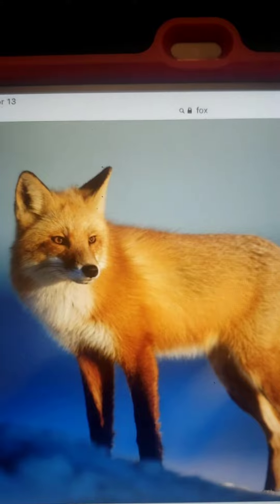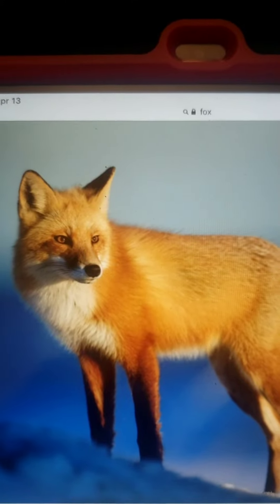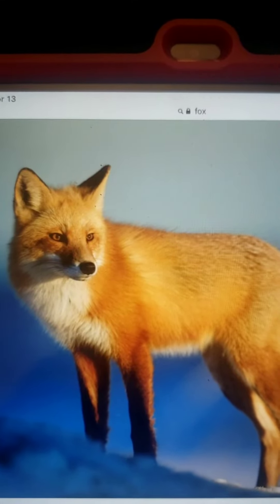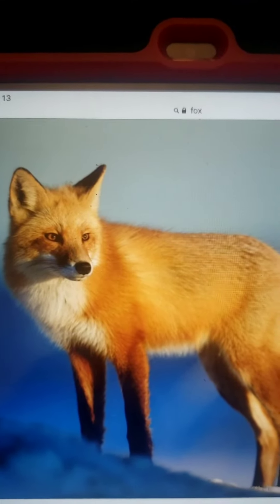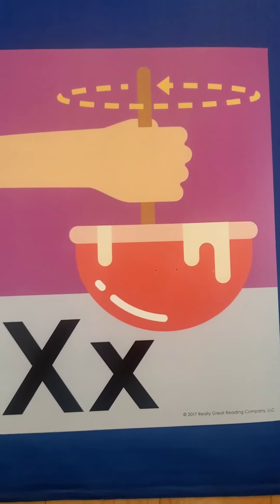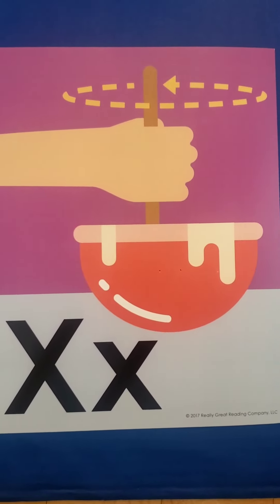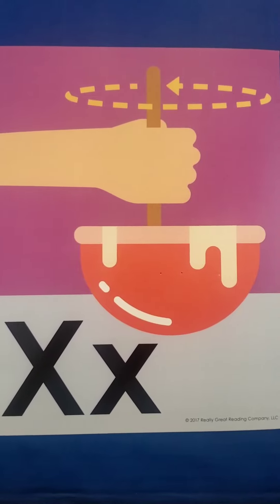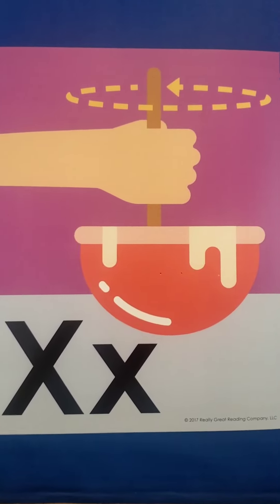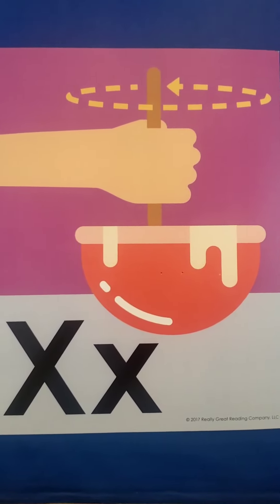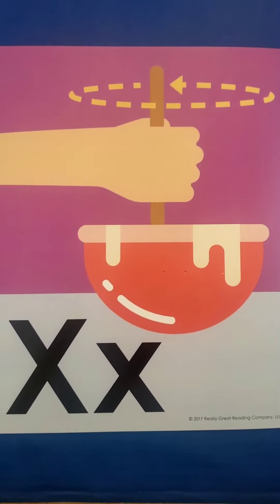Do you know what animal this is? This is a fox. Fox has an X. Fox. This is a box. Box has X. Box. Can you write the letter X and think of more words that have letter X in them? Remember, X says X.